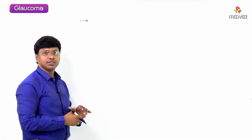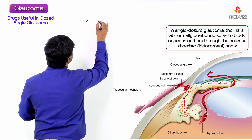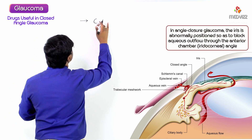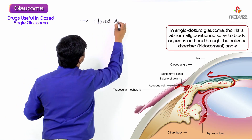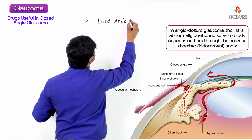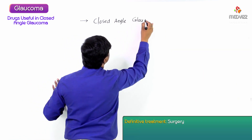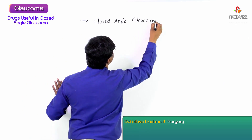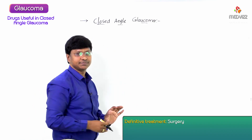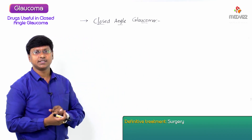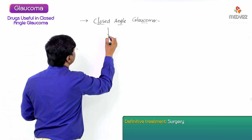Let me tell you about the group of drugs used in the treatment of closed-angle glaucoma. For closed-angle glaucoma, the primary treatment is surgery — the definitive treatment is surgery.